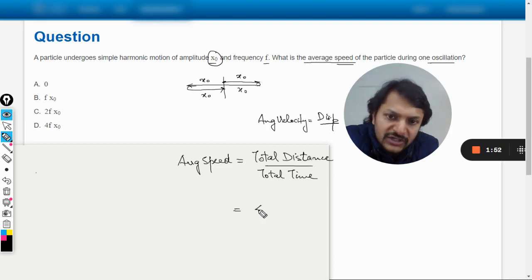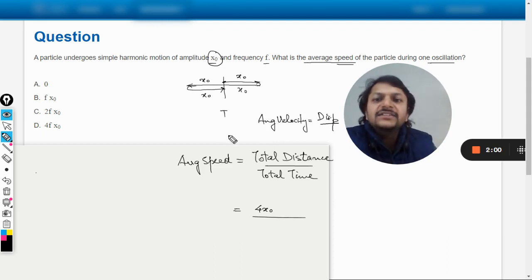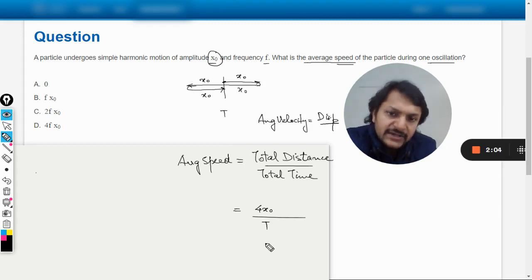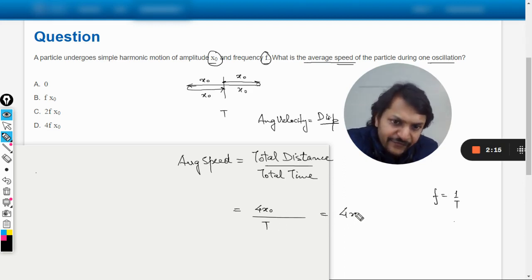So it means the total distance is definitely 4x_0. And now, let us say capital T is the total time period that was taken, so we will divide by capital T. Now T is not given, but the frequency is given to us. So we know that frequency equals 1 by T, so it means this can be written as 4 times x_0 times f.